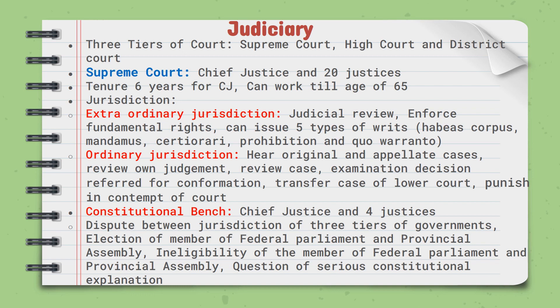There is also the provision of a constitutional bench, which is headed by the Chief Justice. The function of the constitutional bench is to hear disputes regarding the jurisdiction of the three tiers of government, disputes related to elections of members of federal parliament and provincial assembly, ineligibility of members of federal parliament and provincial assembly, and questions of serious constitutional interpretation. These cases are heard by the constitutional bench.